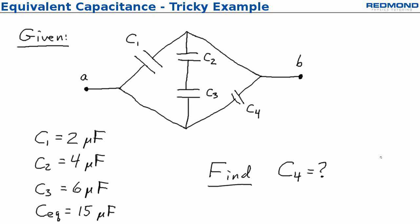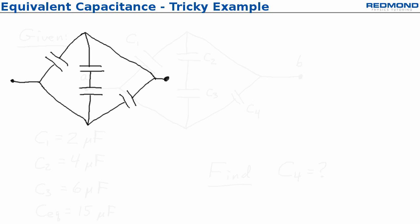In this problem I'm given the equivalent capacitance and three of the four pieces that make it up. So I'm going to have to look at series and parallel elements and actually treat this like a regular equivalent capacitance problem where I have to find CEQ and then I'll get an equation that lets me solve for C4. So let's dive in.